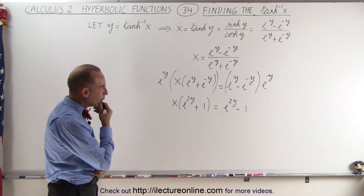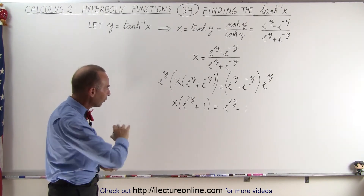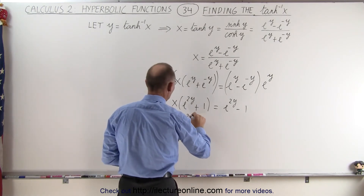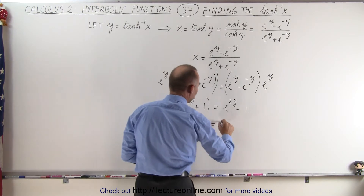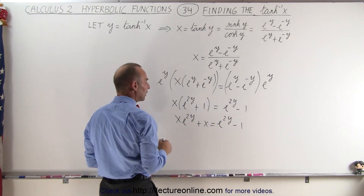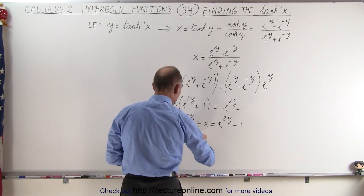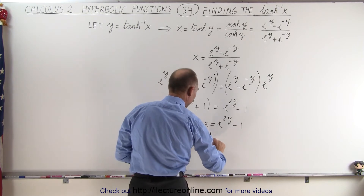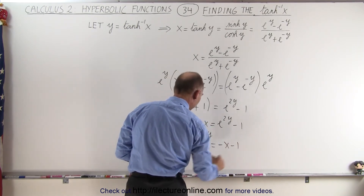Now we can more easily isolate the terms with y in them. Multiplying things out, we get x times e to the 2y plus x equals e to the 2y minus 1. Moving all terms with y to the left side, we get x times e to the 2y minus e to the 2y equal to minus x minus 1.